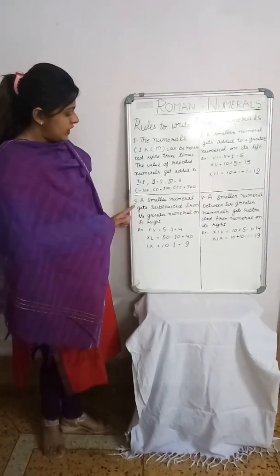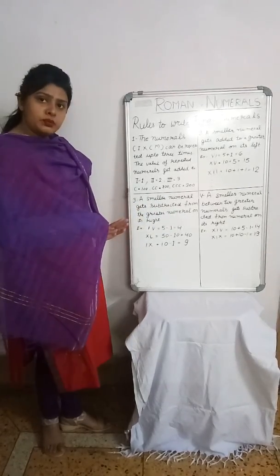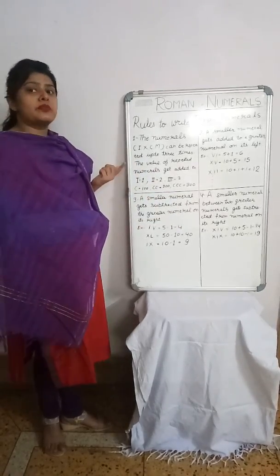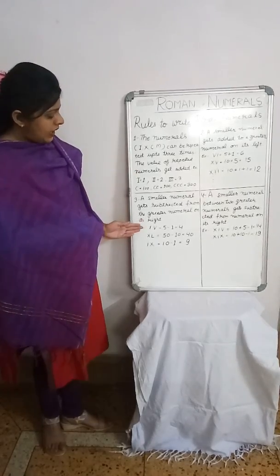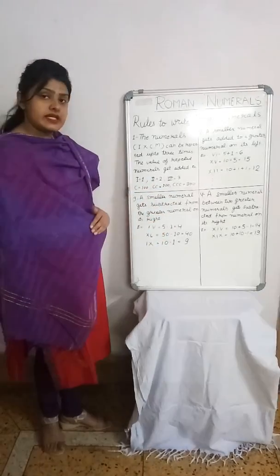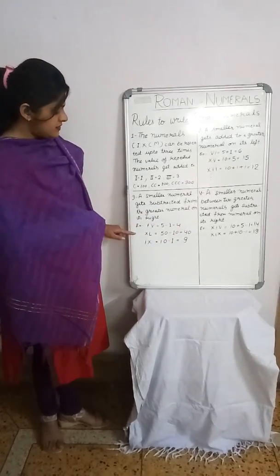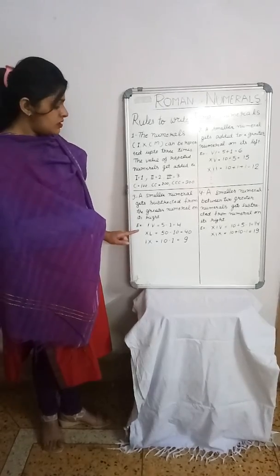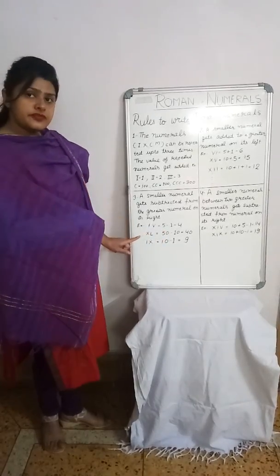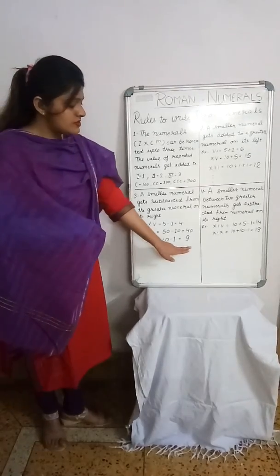Rule 3: A smaller numeral gets subtracted from the greater numeral on its right. This means if a smaller numeral appears before a greater numeral, we subtract. For example, IV: I is smaller and V is greater on the right, so 5 − 1 = 4. XL: X is smaller and L is greater, so 50 − 10 = 40. Similarly, IX: 10 − 1 = 9.